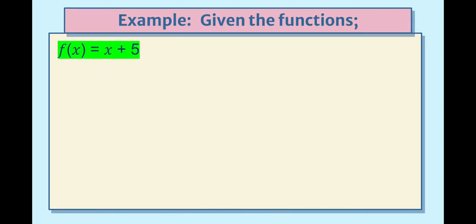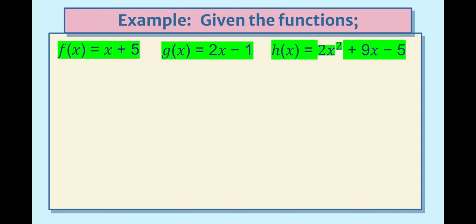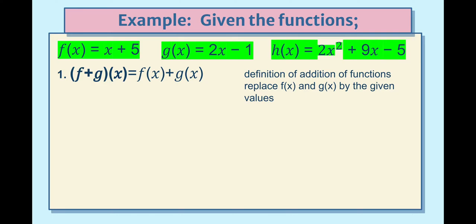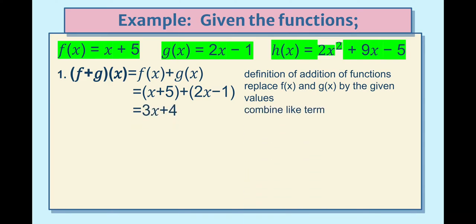Example: given f(x) = x + 5 and g(x) = 2x − 1, and h(x) = 2x² + 9x − 5. To find (f + g)(x), we use f(x) + g(x) by the definition of addition of functions. Replace the functions with their values: (x + 5) + (2x − 1). Combine like terms: x + 2x = 3x, and 5 − 1 = 4. So (f + g)(x) = 3x + 4.